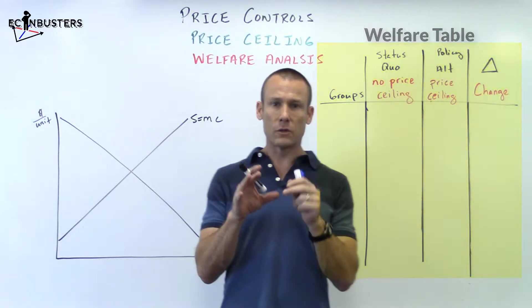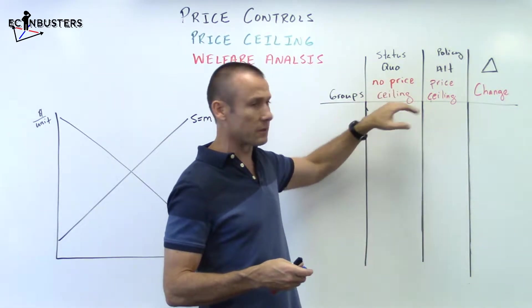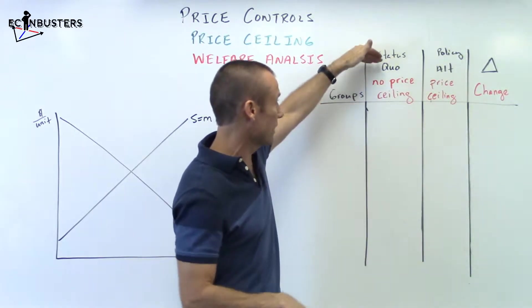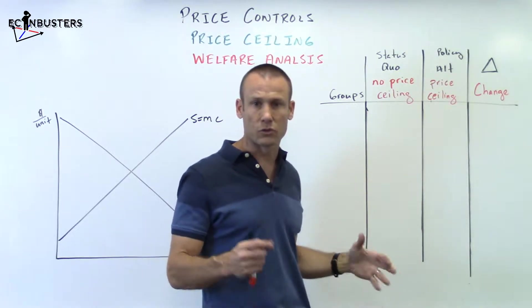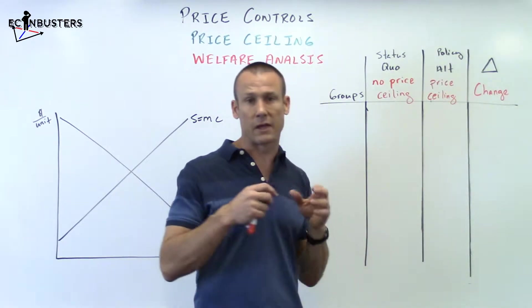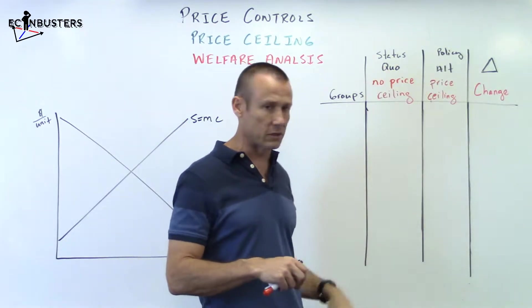I'm a little bit excited because we actually get to finally bring in this thing called the welfare table. Now, what we're going to be doing is we're going to be looking at a situation where we got no price ceiling in place, status quo. And we're going to look at what is the social surplus that we're going to get, the consumer surplus, the producer surplus, the societal surplus.